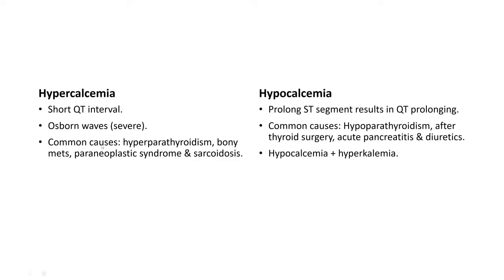The lower ECG shows hypocalcemia, in which the obvious finding is a prolonged ST segment resulting in QT prolongation. Common causes of hypocalcemia include post-thyroid surgery, pancreatitis, hypoparathyroidism, and drugs. Most often, hypocalcemia is given together with hyperkalemia in scenarios. In hypocalcemia you will see a long QT segment and peaked or tall T waves.